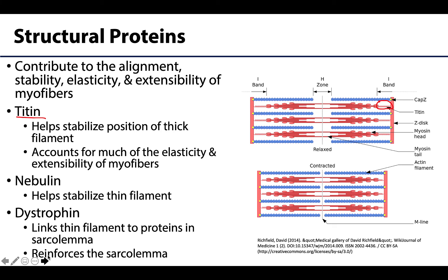In individuals with Duchenne muscular dystrophy, the gene that codes for dystrophin is mutated, leading to little or no dystrophin being produced. Without the reinforcement that comes from dystrophin, the sarcolemma is more likely to tear during muscle contractions, which can lead to slow and eventual muscle rupture and death.